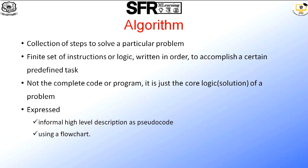We have discussed the introduction to data structures. Next is the algorithm. Before writing a program in any computer language, we first have to draft an algorithm. Therefore, an algorithm is a collection of steps to solve a particular problem. It can also be defined as a finite set of instructions or logic written in order to accomplish a particular task. It is not a complete code or program — it is just the core logic, or the solution to the problem.